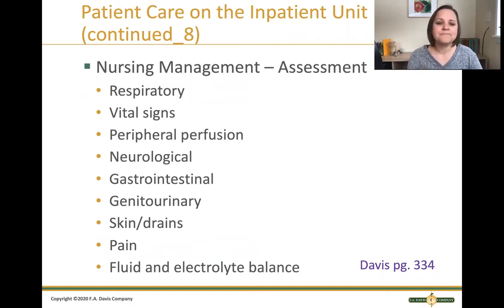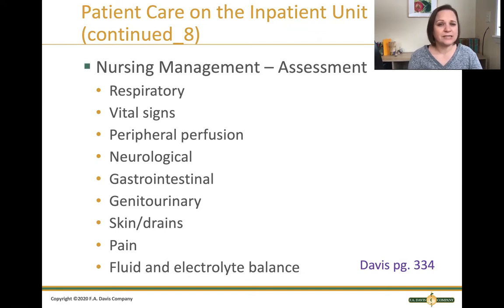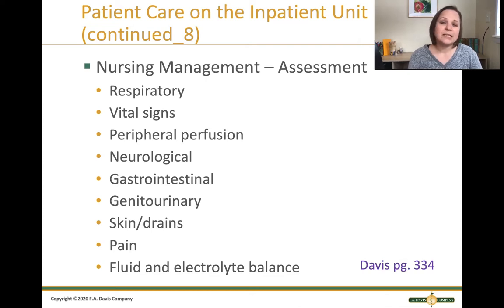Do they have good gastrointestinal motility? Listen for bowel sounds, assess whether they're passing stool, and check urine output — are they producing at least 1 ml per kilogram per hour? What color is the urine? Is there any pain on urination? How does their skin look — are wound edges approximated, dressings clean and dry, any drains present? Is pain under control? Check fluid status through skin turgor, urine output, moist mucous membranes, and lab values for electrolytes within normal range.